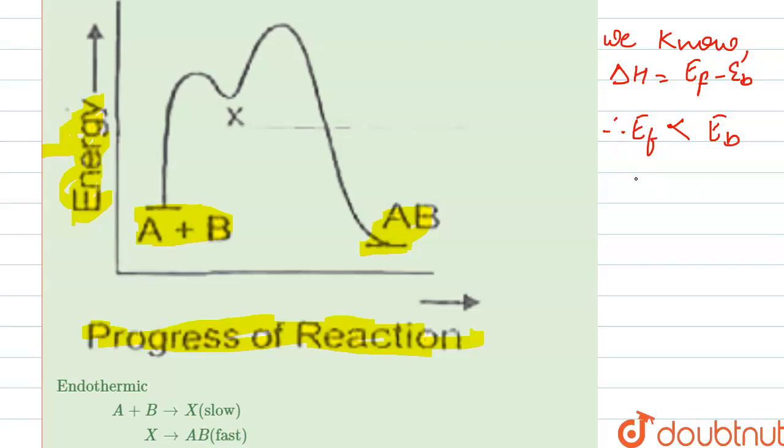Because if we put that here in this equation, delta H equals Ef minus Eb. Ef is smaller, so the whole is minus, so it becomes negative delta H. From here delta H becomes negative, that is exothermic.